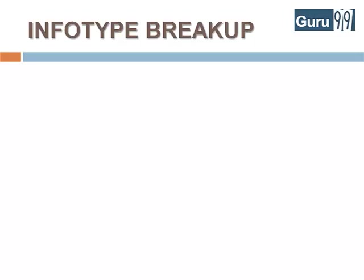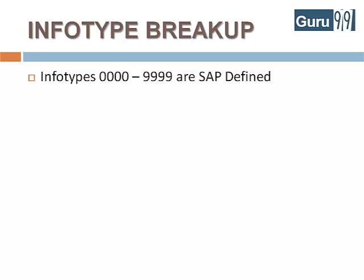In fact, there are a total of 9999 info types defined by SAP. You can use few or all of them depending on your requirements. These info types are categorized for convenience. Info types 0 to 999 store personal administration related data like your bank details, address, and so on. Info types 1000 to 9999 store organizational management related data, like which company or department you work for, who is your boss, or which employees report to you.